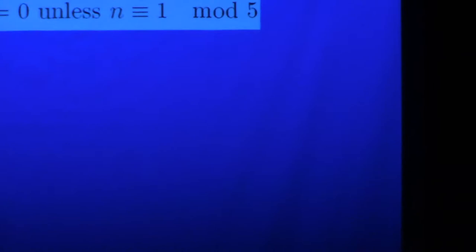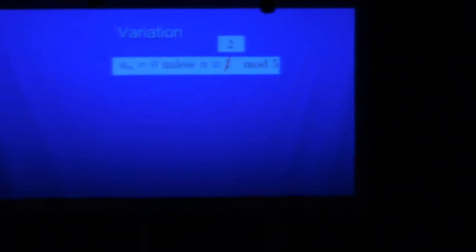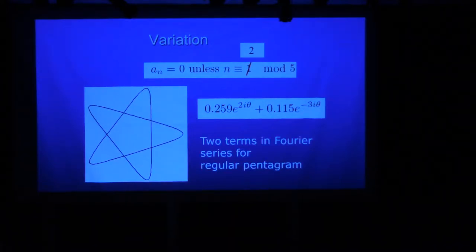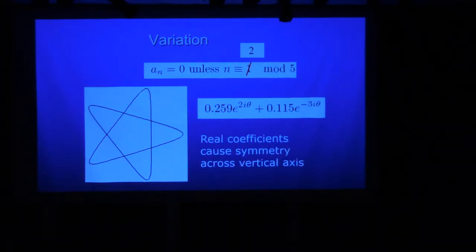So here's a variation. What if instead of having congruent to 1 mod 2, you had them congruent to 2 mod 5? That might look something like this. That's 2 more than 0, that's 2 more than negative 5. It turns out that these are two terms in the Fourier series for a regular pentagram. So if you write out the formula for the parametrization of the regular pentagram and compute the Fourier coefficients, you would find you need that much of this ingredient, that much of this ingredient, and that does a pretty good job of tracing the regular pentagram.